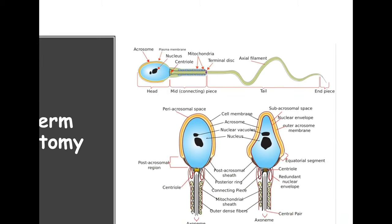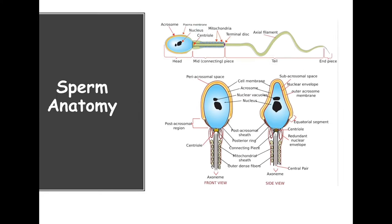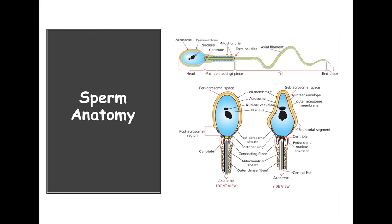Here's a closer look — a front view and a side or lateral view of the actual sperm. Once again, here is the head with the acrosome region, a membrane surrounding it, the nucleus and nuclear vacuoles, and a mitochondrial sheath. There's a lot of mitochondria here, which plays a huge role in its ability to make energy for swimming. We have the centrioles and a membrane lining on the outside. This is the general structure of a sperm in a bit more detail.